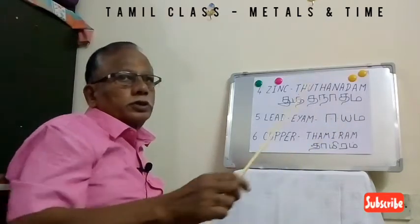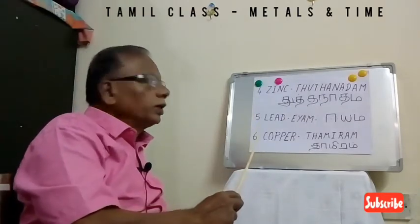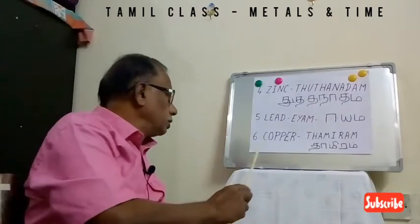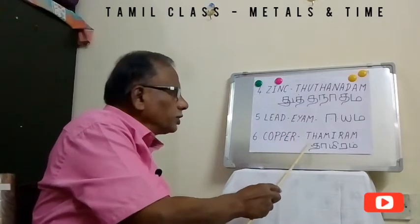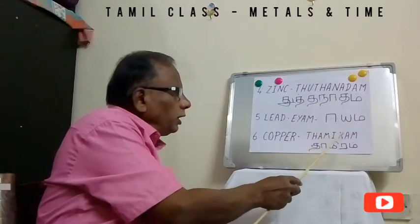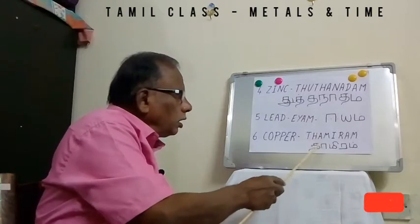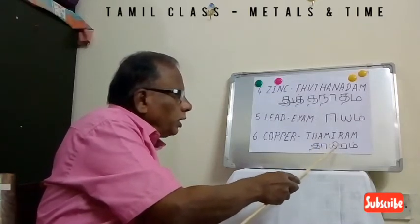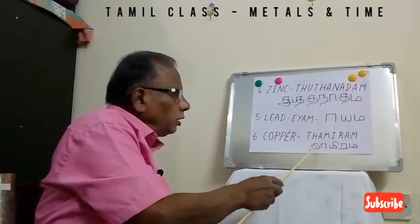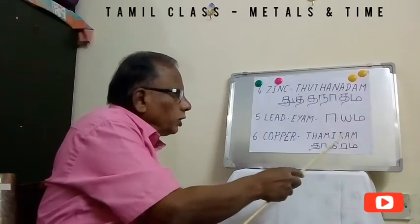Most vessels use lead for polish. The sixth one is Copper. Copper is a good conductor of electricity. For copper we call it Tamiram — T-H-A-M-I-R-A-M. In Tamil: Ta, Me, Ra, Im — Tamiram.